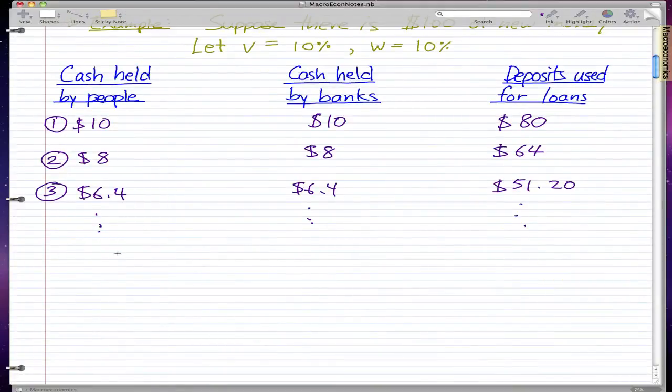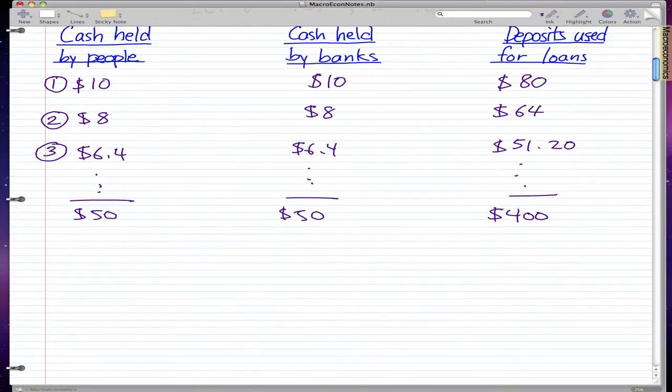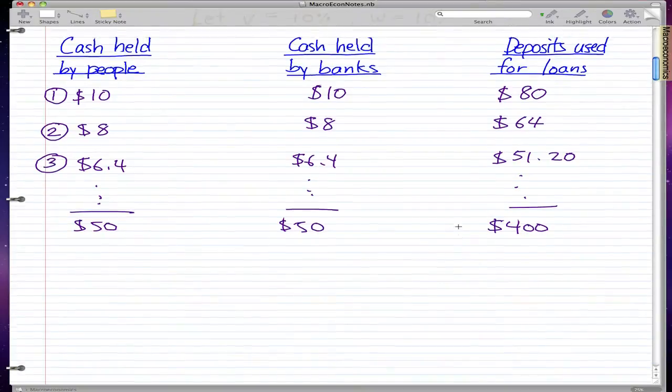At the end we sum them all up. So we sum these all up and I get $50, $50, and $400. You can go through the calculations yourself. Now I'm going to show you another way. Notice that our total amount of money created is $500. We just took $100 of new money and made $500 from it.